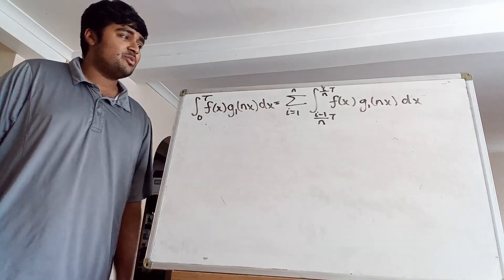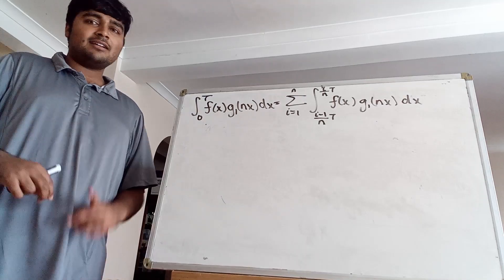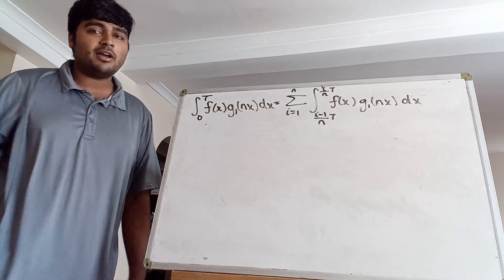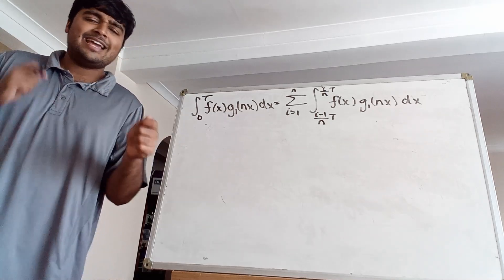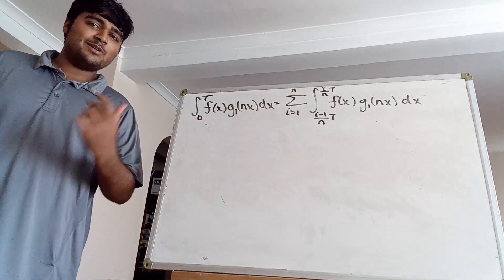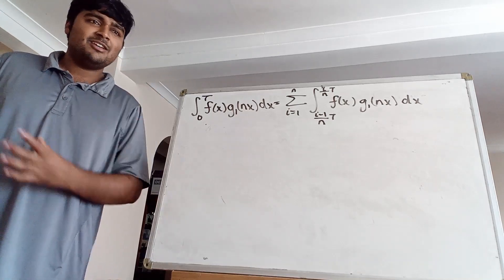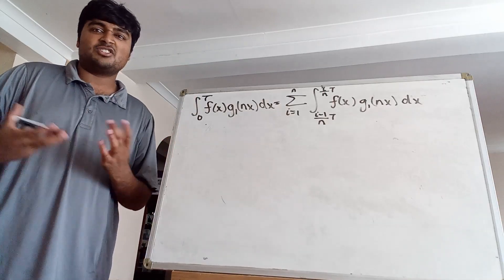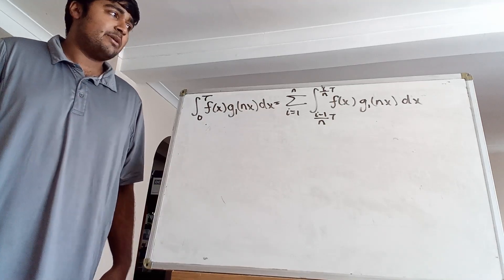We have that integral from 0 to t of f(x) g1(nx) dx given by that sum. The next step is to use the mean value theorem. Two points first: we split g into g1 and g2 because to apply the mean value theorem we require the function to be non-negative, and g wasn't assumed non-negative in the lemma — hence splitting into one non-negative function minus another. Second point: g1 and g2 are also periodic with period t. You can see this because g1(x+t) = max(g(x+t), 0) = max(g(x), 0) = g1(x), and similarly for g2.